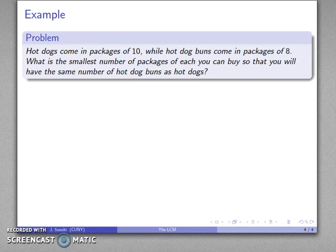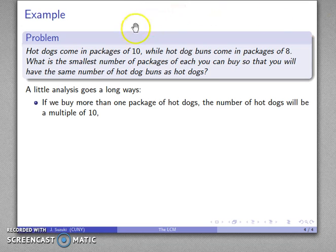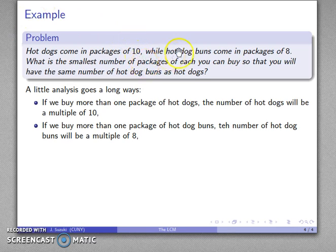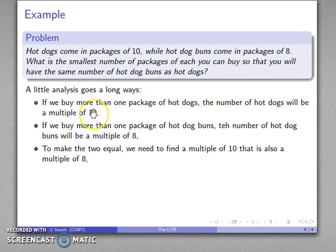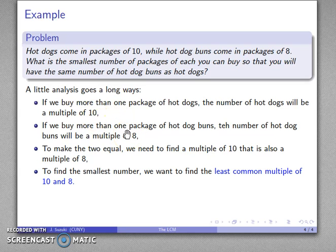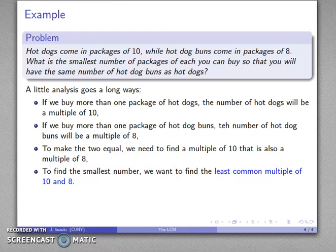Here's another common problem: hot dogs come in packages of 10, while hot dog buns come in packages of 8. What's the smallest number of packages of each that you can buy so you will have the same number of hot dog buns as hot dogs? If I buy more than one package of hot dogs, the number of hot dogs is going to be a multiple of 10. Likewise, if I buy more than one package of hot dog buns, the number of hot dog buns is going to be a multiple of 8. Since I want the same number of both, I want to find a multiple of 10 that is also a multiple of 8. Because I want the smallest number of packages, I want to find the least common multiple of 10 and 8.